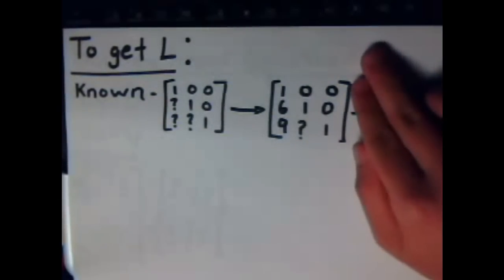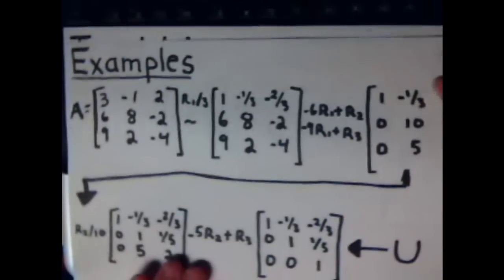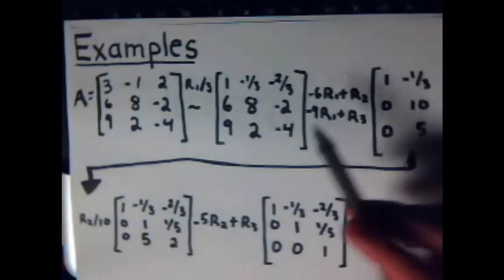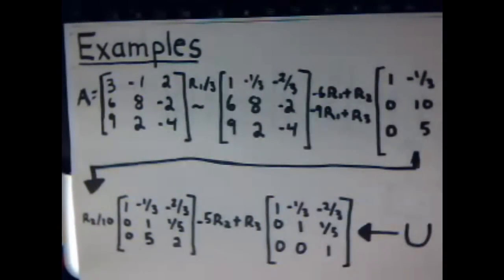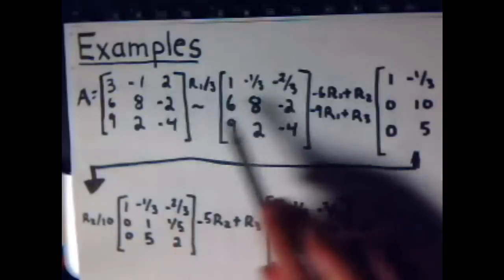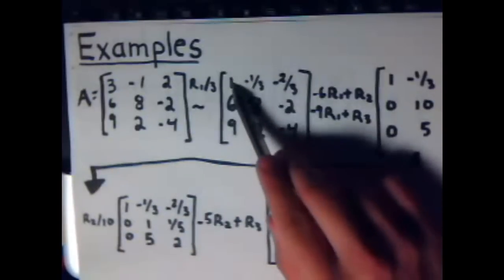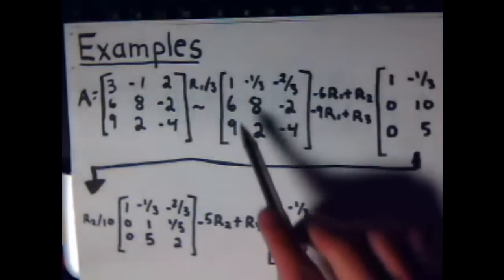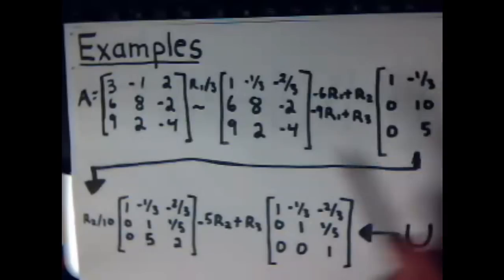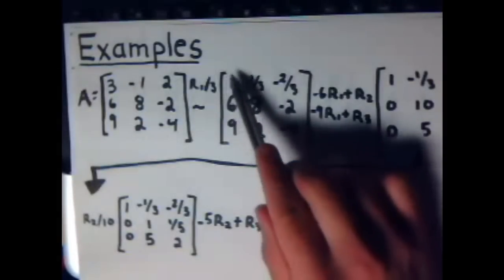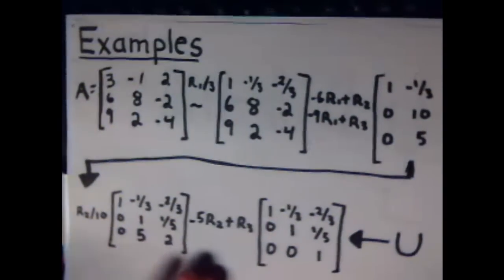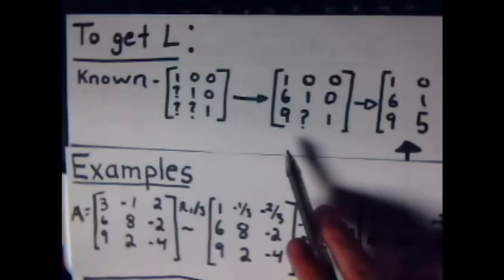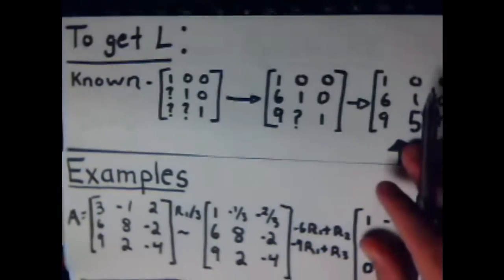And the way I like to think about that, I'll kind of reference this again. I think of trying to make this a 1, which we did during here. And then you do 6 divided by the number that was used to eliminate it, which is 6. And then 9 divided by the number that was used to eliminate it, which is 9. And of course, those happen to be the numbers.